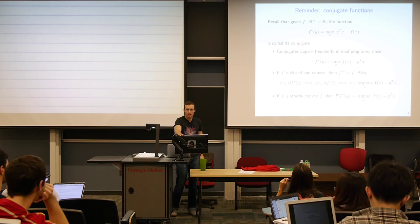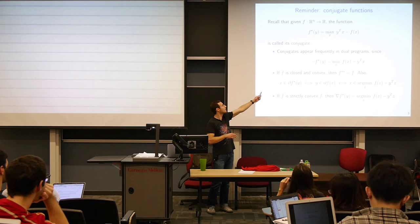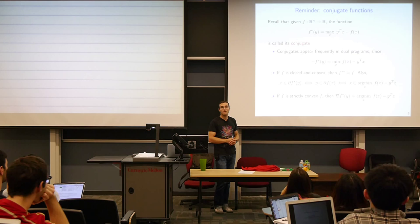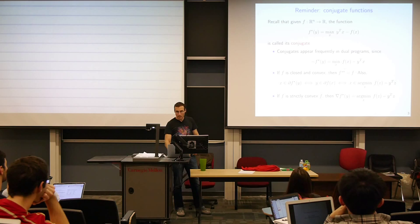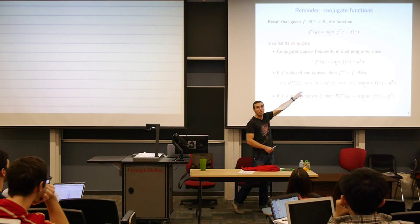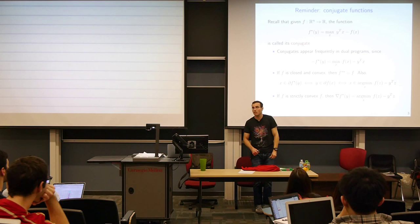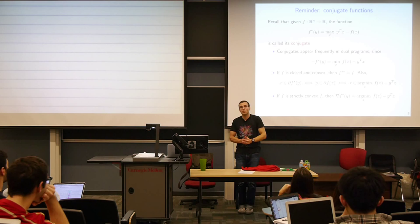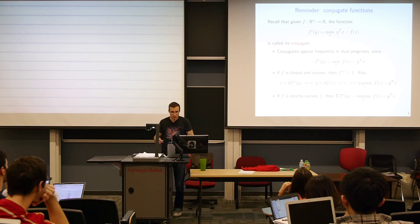Conjugates appear frequently in dual problems, and they're very naturally tied to duality. Taking the negative of both sides of the definition, the negative conjugate of f at point y equals the minimum over all x of f(x) minus y^T x. This looks like a piece of the Lagrangian — if we had a linear constraint on x and introduced a dual variable y, minimizing over the primal variables to get the dual function would give us something like this, yielding the conjugate. So conjugates are very intimately tied to dual problems.